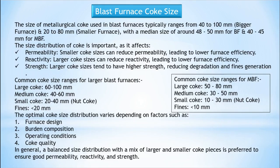Common coke size ranges for MBF: large coke 50–80 mm, medium coke 30–50 mm, small coke 10–30 mm, fines less than 10 mm. The optimal coke size distribution varies depending on factors such as furnace design, burden composition, operating conditions, and coke quality. In general, a balanced size distribution with a mix of larger and smaller coke pieces is preferred to ensure good permeability, reactivity, and strength.